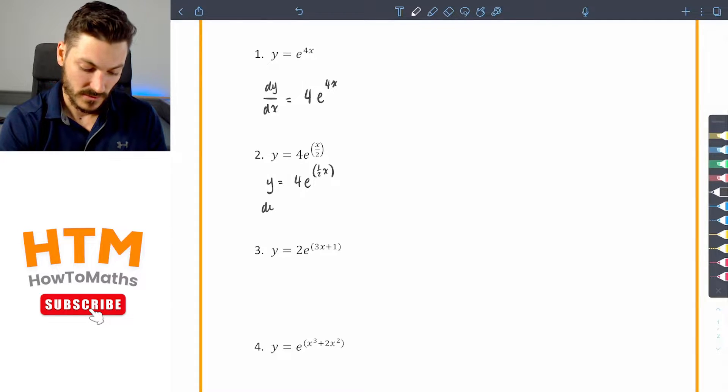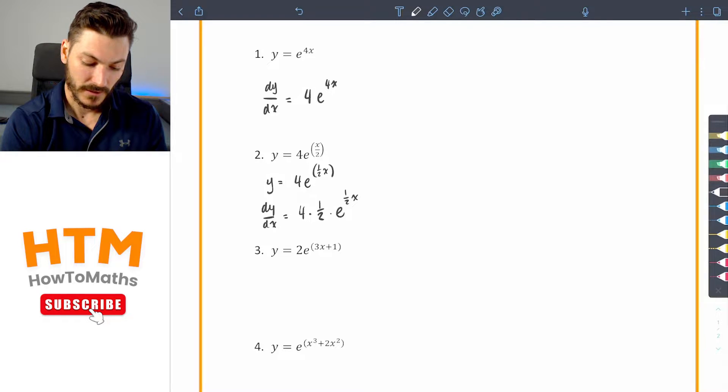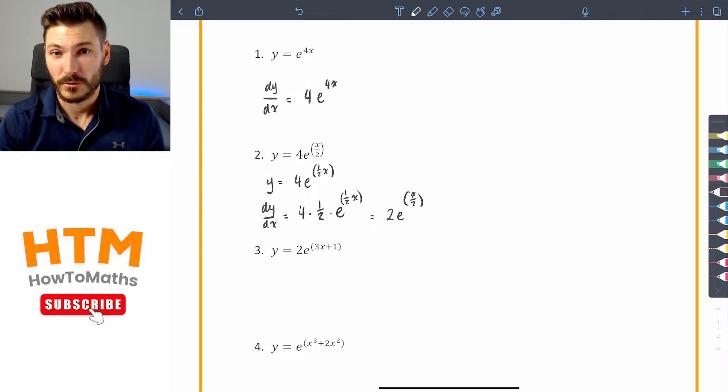Which means when I do the derivative of y with respect to x, I have four times that half that I bring down times e to the power of one half x, which is going to simplify down to two e to the x on two or one half x, whatever you prefer.